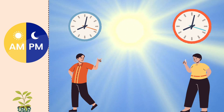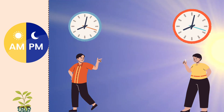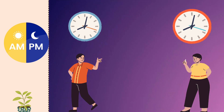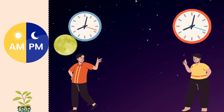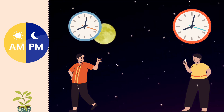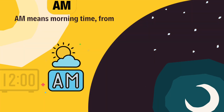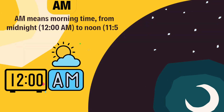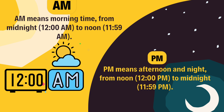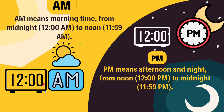Now that we know how to read the clock, let's quickly understand AM and PM. These tell us whether the time is in the morning or afternoon and evening. AM means morning time, from midnight (12 AM) to noon (11:59 AM). PM means afternoon and night, from noon (12 PM) to midnight (11:59 PM).